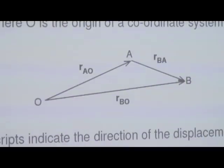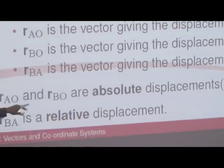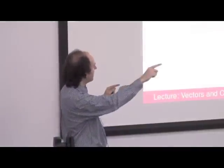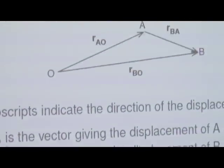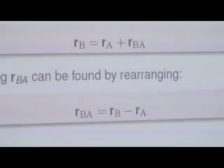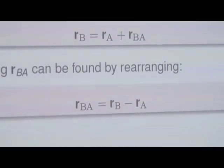R B-A is a relative displacement, and anything with respect to an origin on the Earth's surface is known as an absolute displacement — we often refer to those as just R A and R B. If we do a bit of maths, R B equals R A plus R B-A. We can find out what our relative vector is — it's basically the difference between the two vectors: R B-A equals R B minus R A. This is where the order of the subscripts is useful — relative vectors always have two terms, one vector minus the other, in the same order.